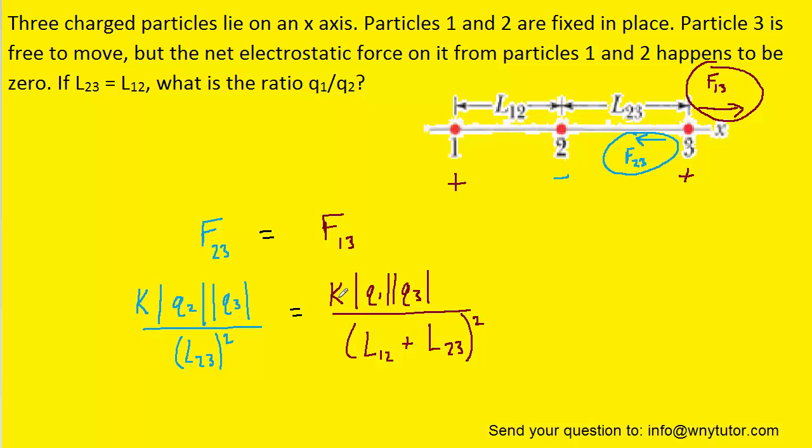On the right side, for F13, we have again the Coulomb's constant multiplied by the magnitude of the charges Q1 and Q3. Now, we would need the distance from charge 1 all the way over to charge 3, and that distance is L12 plus L23. And so we've put that there. Notice the distances are indeed squared.